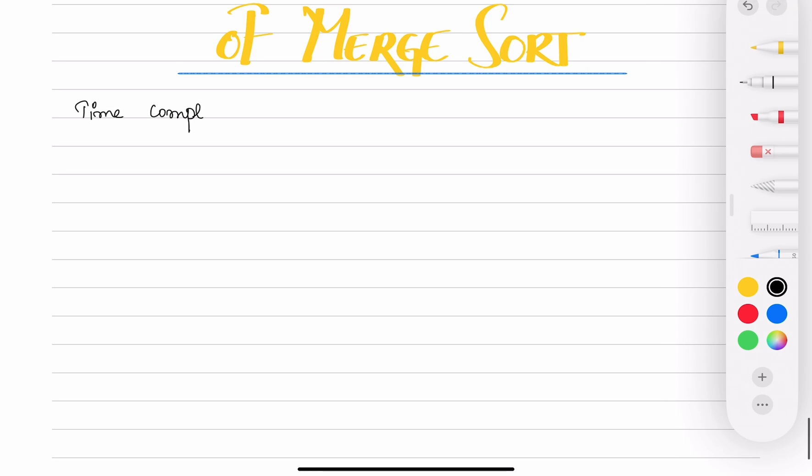If we recall what principles merge sort works on, it works on first divide, second conquer, and third merge. These are the three principles that merge sort works on.